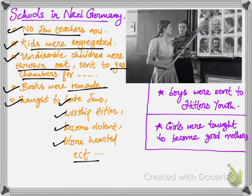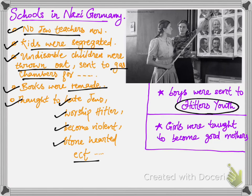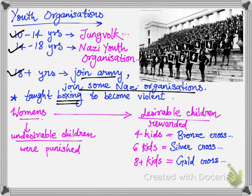There were different youth organizations in Nazi Germany. Boys from 10 to 14 years were sent to Jungvolk, where they were taught boxing and to worship Hitler and hate Jews. From 14 to 18 years, boys were sent to the Nazi Youth Organization. From 18 years onwards, they had to join the army or become part of a Nazi organization. Since 1940, these organizations were in effect, collectively called Hitler Youth. Hitler strongly believed that boxing is a sport that makes people violent and stone-hearted.